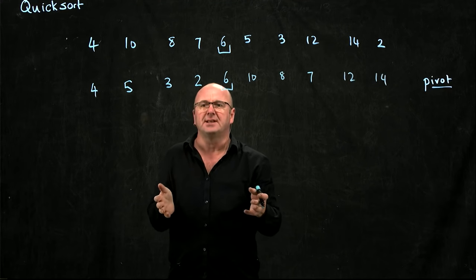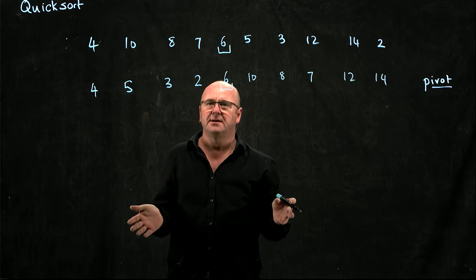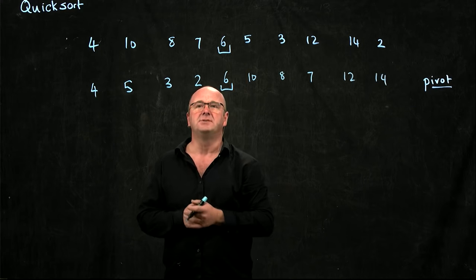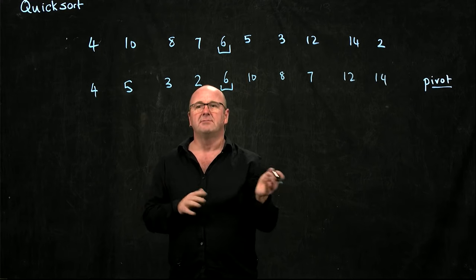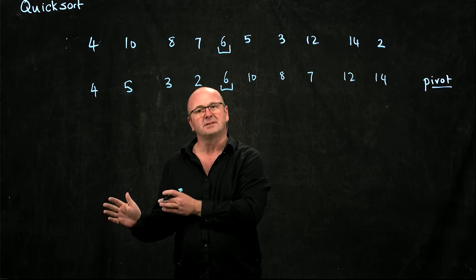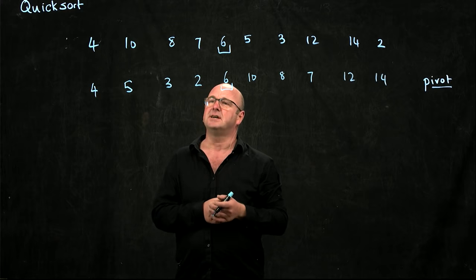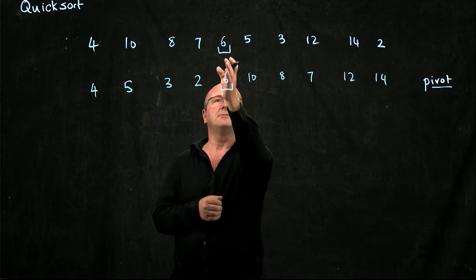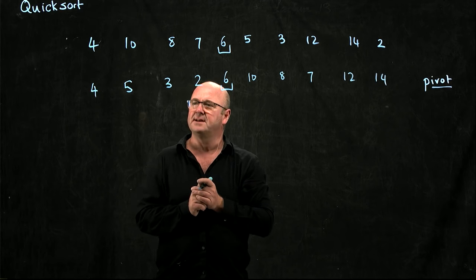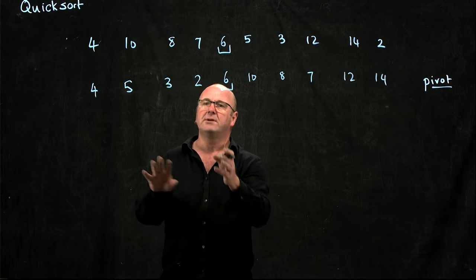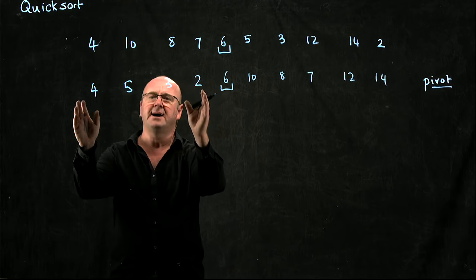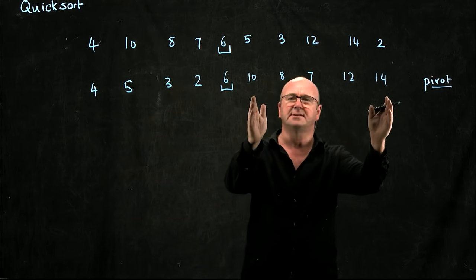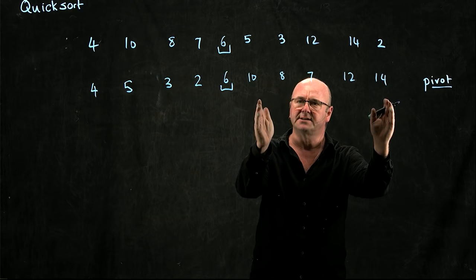So we've kind of sorted the list. The way quicksort works is that we choose a pivot, move things that are smaller to the left and bigger to the right. Now that we've done half the list, we don't need to compare things on the left of the list with things on the right of the list.